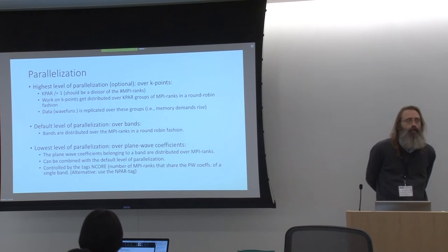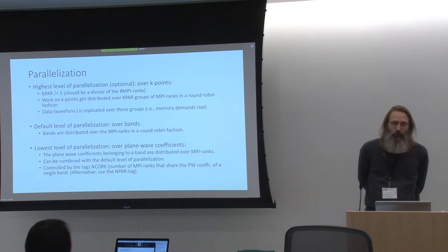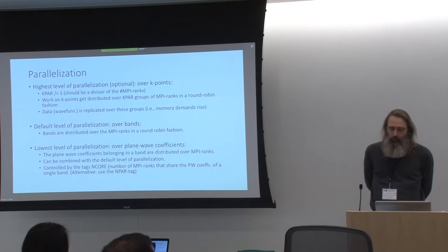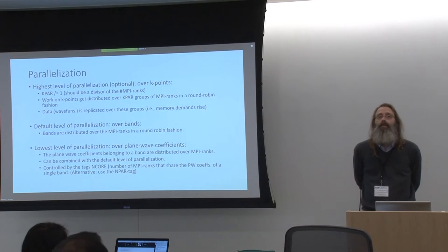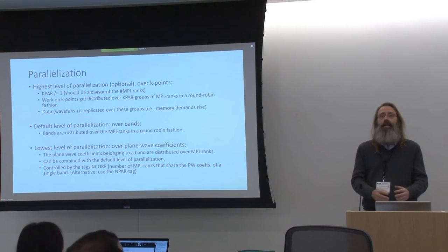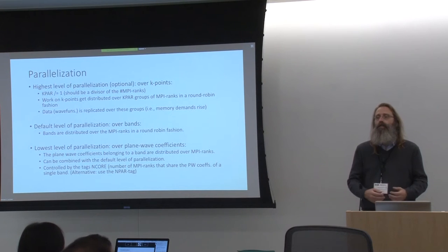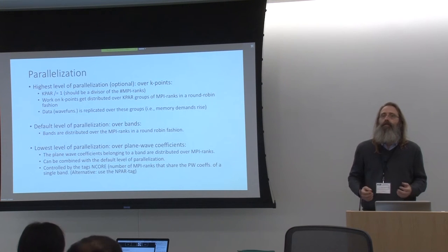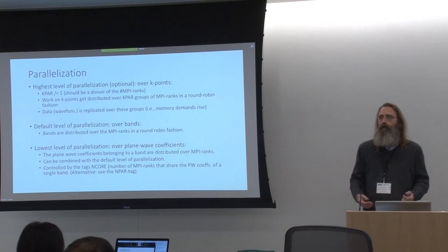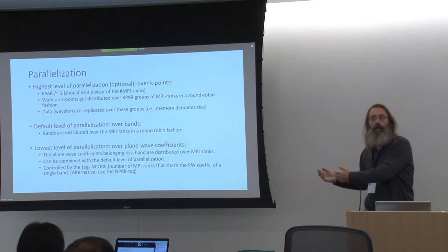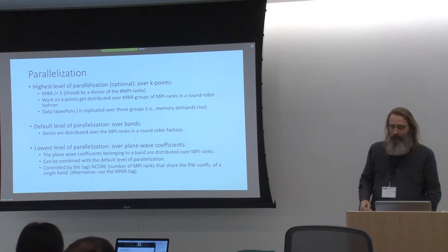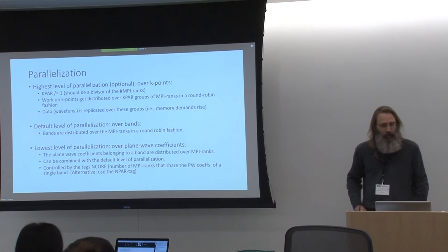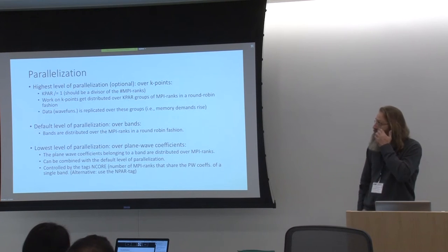Why is K-point parallelization not the first strategy followed? Because if you go to large systems, you will have fewer and fewer K points normally. It lends itself to very efficient parallelization, but under many circumstances it doesn't bring a lot - if you have a very large system you may have only one K point, and you couldn't parallelize over that. So it's not a perfect strategy, but that is the way it is, and it is the highest level - the first division we make in our MPI ranks.